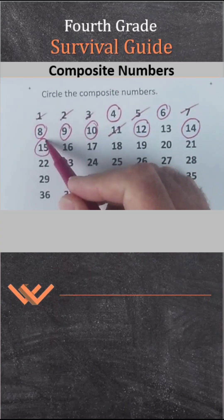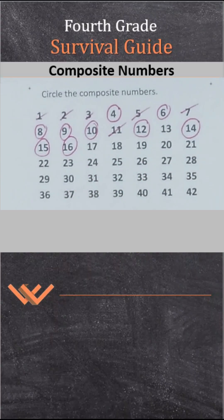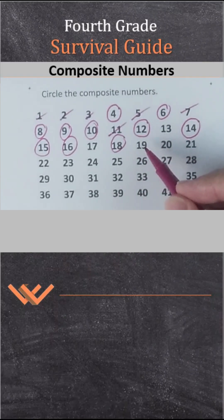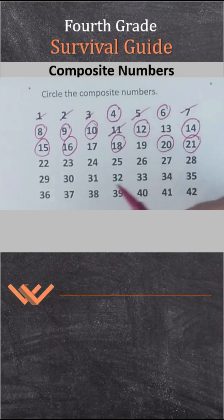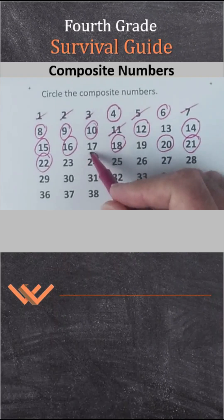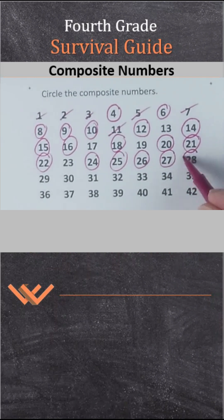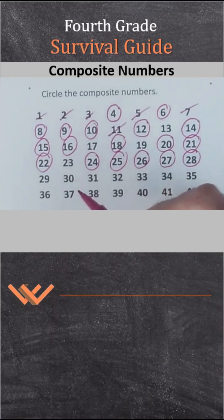14 — 2 times 7. 15 — 3 times 5. 16 — 4 times 4. Those are clues that there's more than just 1 and itself. 17 is definitely a prime. 18 — 3 times 6. 19 is prime. 20 — 4 times 5. 21 — 3 times 7. 22 — 2 times 11. 23 is prime. 24 — 6 times 4. 25 — 5 times 5. 27 — 3 times 9. 28 — 4 times 7. 29 is prime. 30 — 6 times 5. 31 is prime. 32 — 2 times 16.